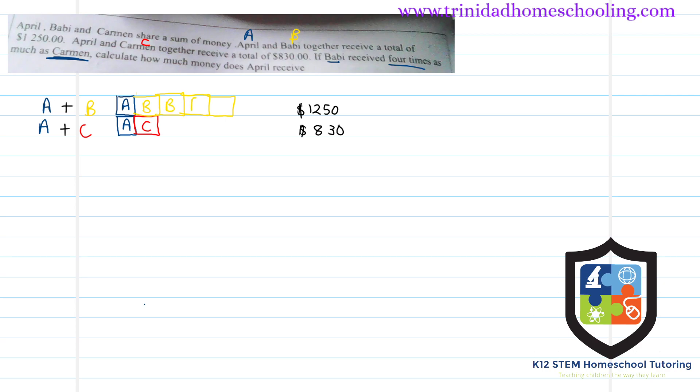One, two, three, four times as much as Carmen. So all this is Barbie's. Now let's take a look at how much more April and Barbie's share is to April and Carmen's share.